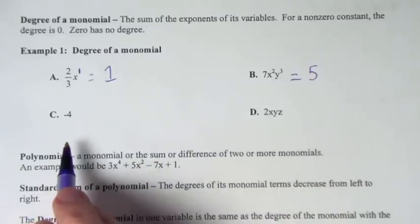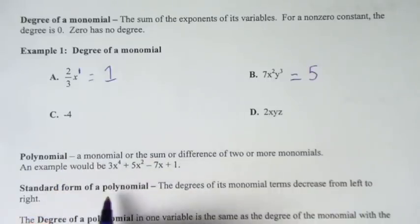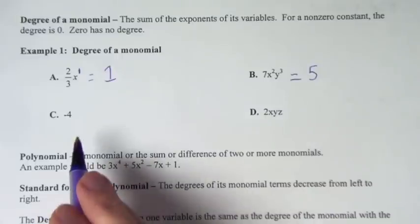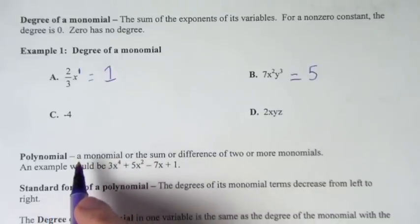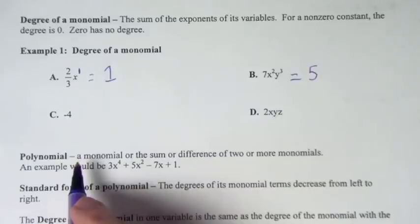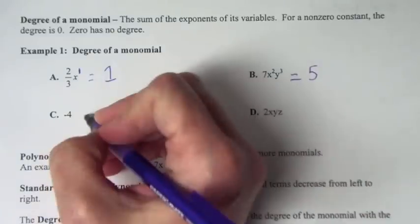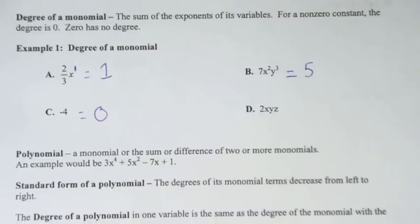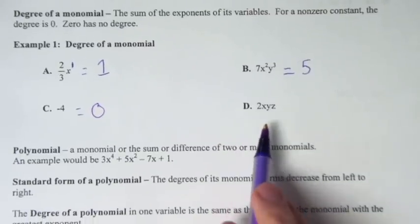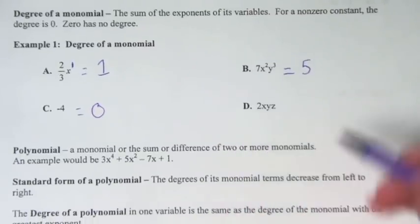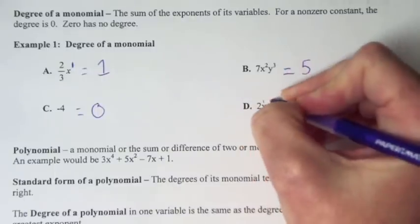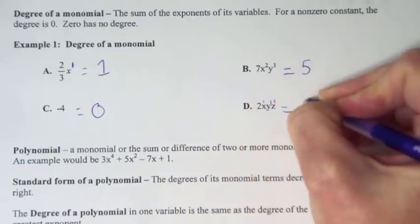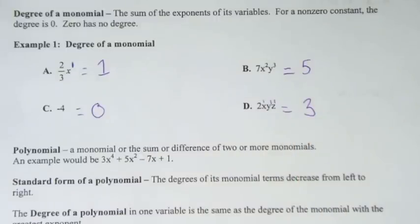Letter C: negative 4. Are there any variables? No. Since there's no variables, what's our degree? For any non-zero constant, the degree is 0. So this degree is 0. How about letter D? We have xyz. What are those exponents? All of them have an exponent of 1, so our degree is 3. That's how we find the degree of a monomial.